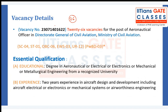Out of the 26 posts, three have been allotted for persons with benchmark disability (PWD). Excluding those three, there are 23 vacancies for non-disabled candidates and 3 for PWD. The category-wise vacancy breakdown is: SC - 4, ST - 1, OBC - 6, EWS - 3, and Unreserved - 12.